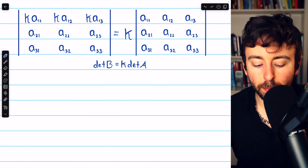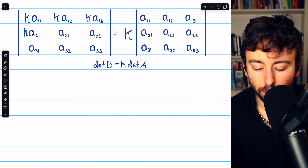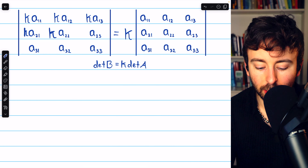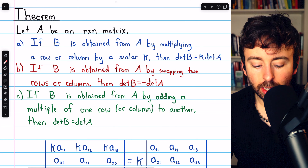This also means if we were to multiply two rows, for example, by the scalar K, then the effect would be to multiply the determinant of A by two factors of K, so K squared.